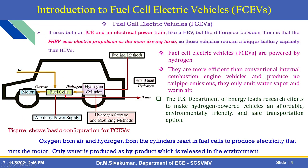This figure shows the basic configuration for fuel cell electric vehicles. The fueling method uses a hydrogen cylinder. Fuel cell electric vehicles are powered by hydrogen; they are more efficient than conventional internal combustion engine vehicles and also produce no tailpipe emissions — they only emit water vapor and warm air.